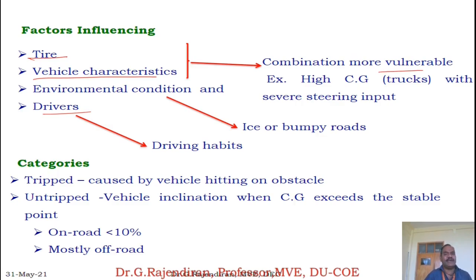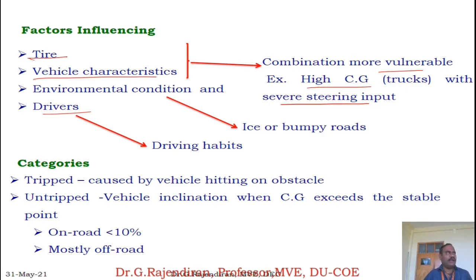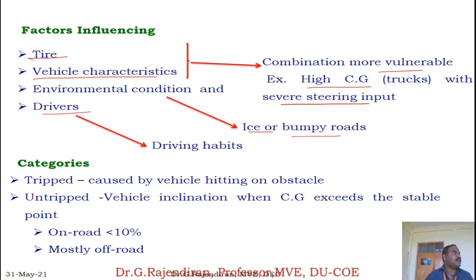For example, if a vehicle has a higher centre of gravity and a severe steering input is given, these two vehicle characteristics lead to a rollover. When operating a vehicle on icy or bumpy roads, the friction between road and tyre is reduced, so there is a possibility of more lateral acceleration due to centrifugal force. The resistance offered by the tyre to the road surface during cornering leads to rollover. On a bumpy road, one wheel is at a higher position and another at a lower position, causing the vehicle to roll.